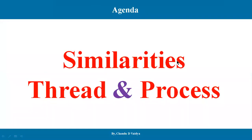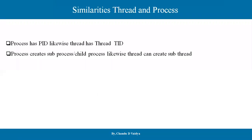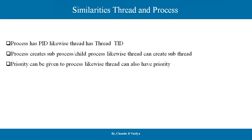There are some similarities between thread and process. A process has a PID; likewise, a thread also has a thread ID for identification at the system level. A process can create a sub-process or child process; similarly, a thread can create a sub-thread. Priority can be given to a process; likewise, a thread can also have a priority — you can exit it, preempt it, and pause it.